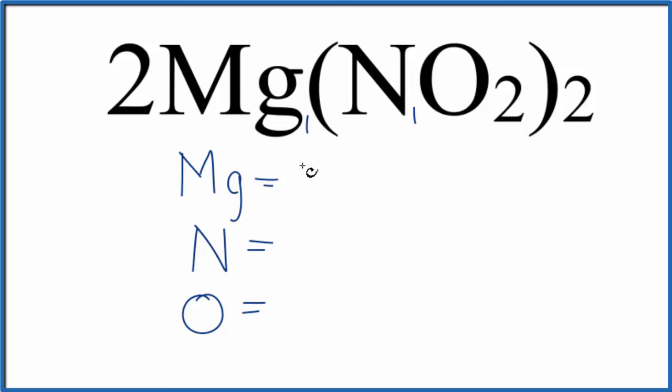So magnesium, one times two. We have two magnesium atoms. Then it gets a little more complicated. For the nitrogen, we have one nitrogen times this two here. This two here goes to everything. So one times the two. And then we need to multiply that by the coefficient out here, because this coefficient goes to everything. So one times two times two. That's two times two is four. Four nitrogen atoms.